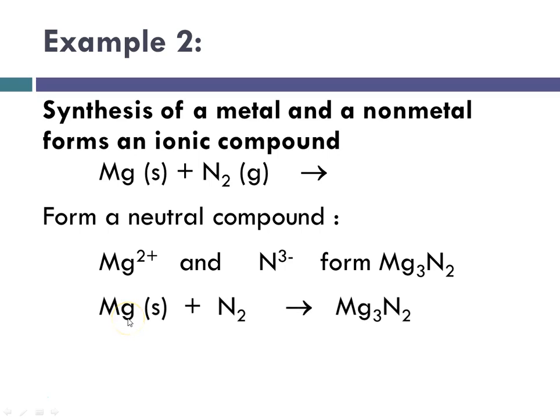So now we can write our formula for our product. So we have magnesium plus nitrogen yields magnesium nitride. We need to balance. It's going to end up as 3 magnesiums plus nitrogen yield magnesium nitride.